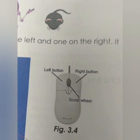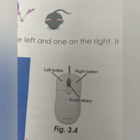A mouse points towards an object on a computer screen. It is also known as the pointing device, and it is also called the mouse pointer. The first computer mouse was a wooden one. It was much larger than a modern mouse. It was rectangular and had a small button in the top right corner.